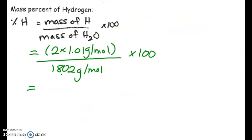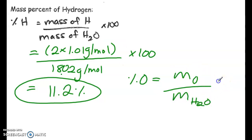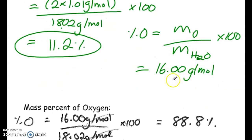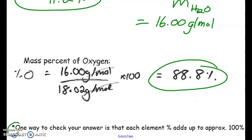Calculating: 2.02 divided by 18.02, times 100 gives us 11.2% hydrogen. For oxygen: 16.00 divided by 18.02, times 100 gives 88.8% oxygen. As mentioned, the elements should add up to a number very close to 100%.